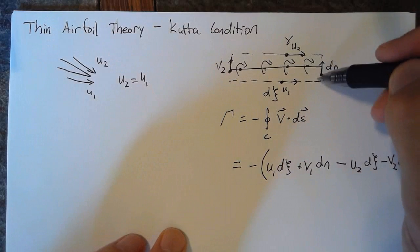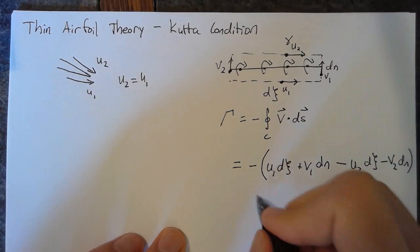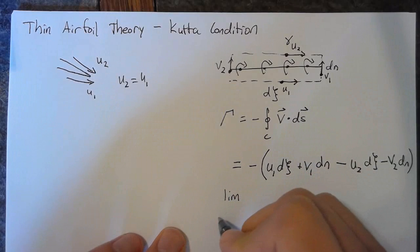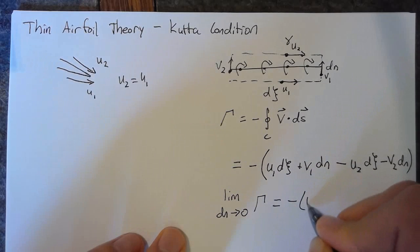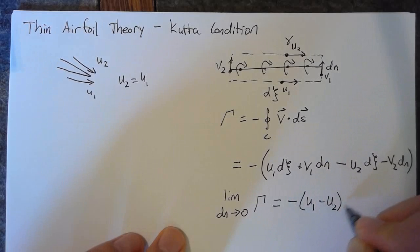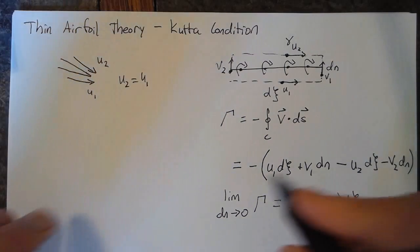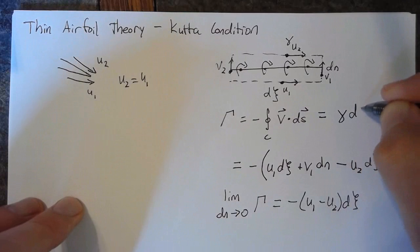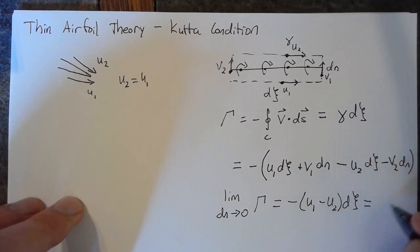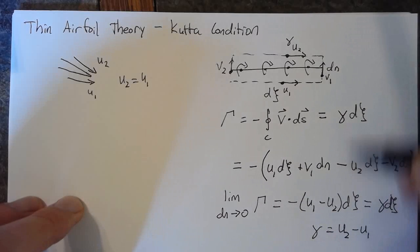This distance in the height direction, dn, is arbitrary. So we can make it arbitrarily small and take the limit of our circulation as dn approaches 0. This is simply equal to negative U1 minus U2 times dc. And you may remember that this circulation is also equal to our gamma times dc. This means that gamma is simply equal to the jump in velocities between the top and bottom surfaces.